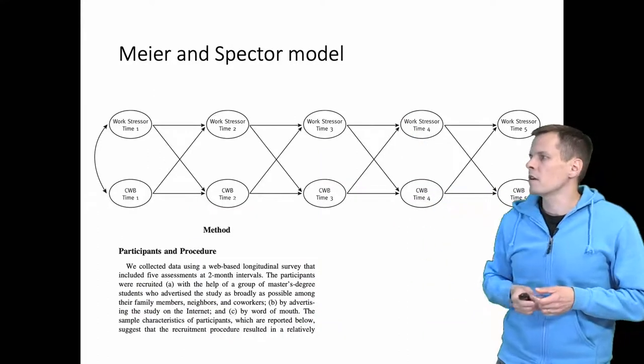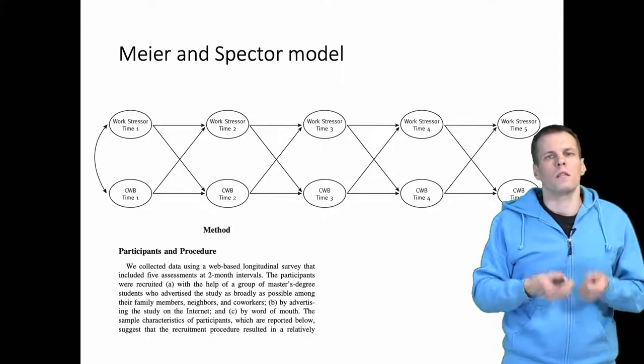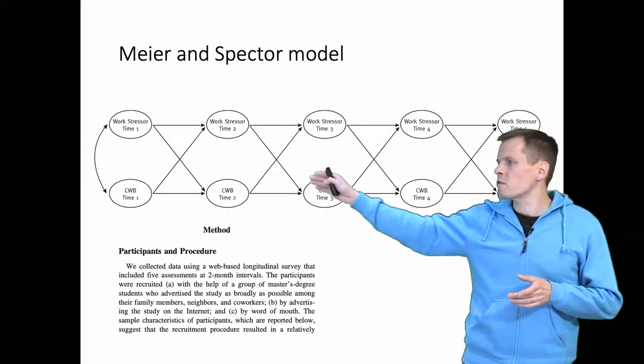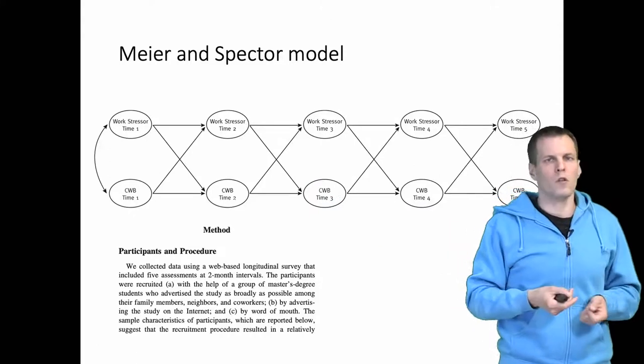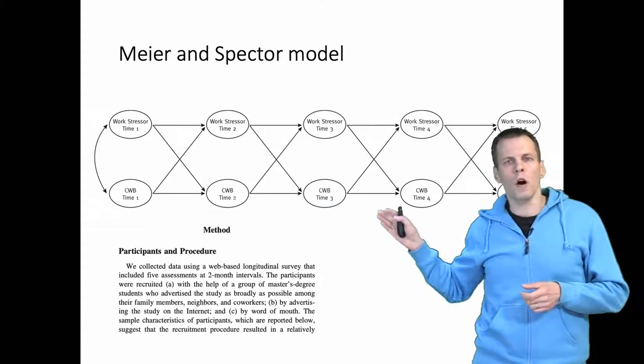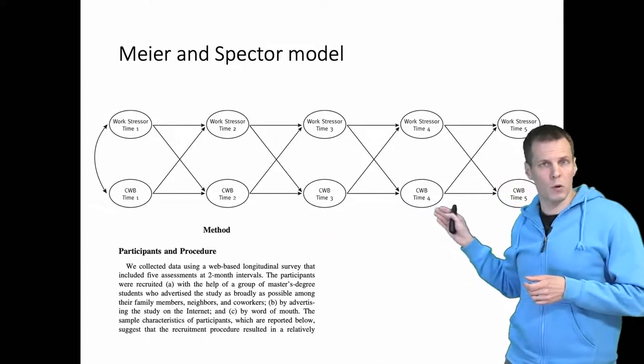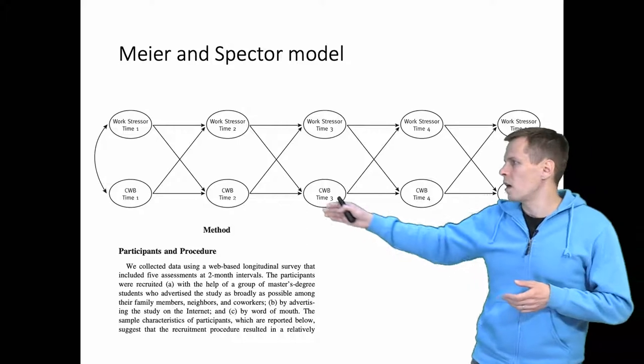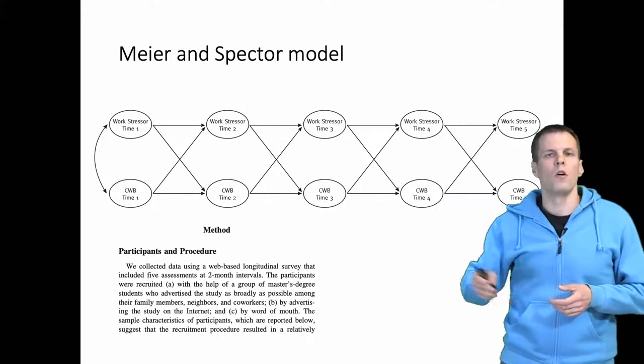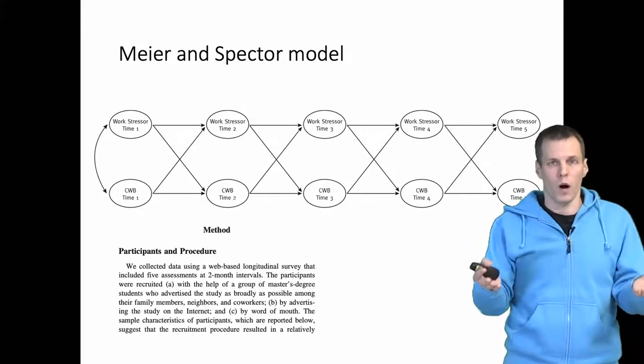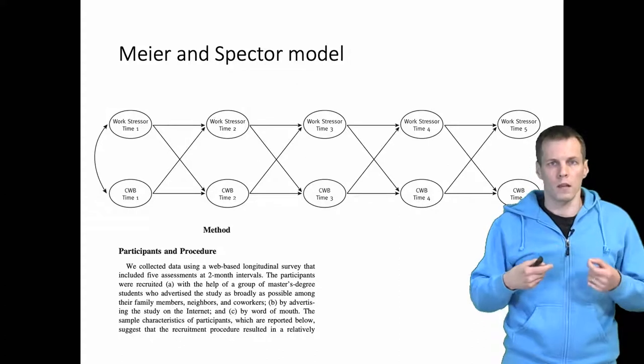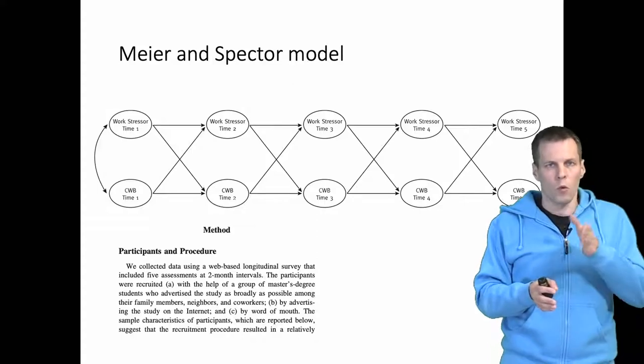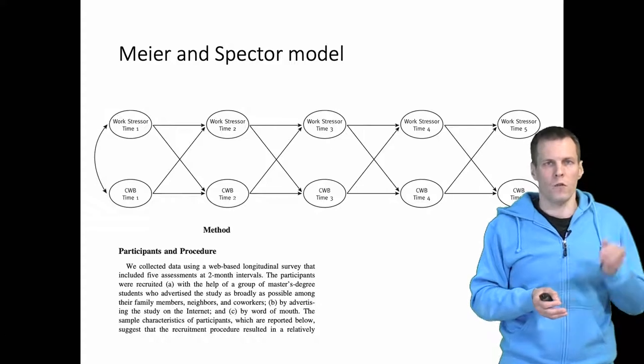This example is from Meyer and Spector. They measured work stressors and counterproductive work behavior at five time points two months apart, testing whether stressors caused counterproductive work behavior or the other way around. They also had this two-month interval which allowed us to test different lags. We could specify the model using four-month lag or half a year lag depending on the research question. These models allow us to check whether X causes Y or Y causes X, and also how long it takes for X to cause Y.